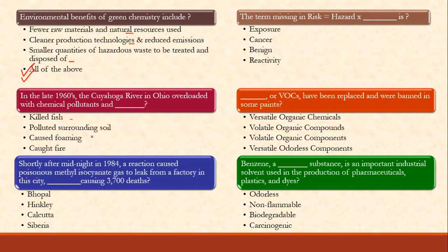In the late 1960s, the Cuyahoga River in Ohio was overlaid with chemical pollutants. Did it kill fish? No — that was Minamata disease. Did it pollute surrounding soil? No, that was the Love Canal problem. The Cuyahoga River caught fire — it was a river of fire — it caught fire in the 1960s. I have a separate video on the Cuyahoga River and Love Canal case studies.